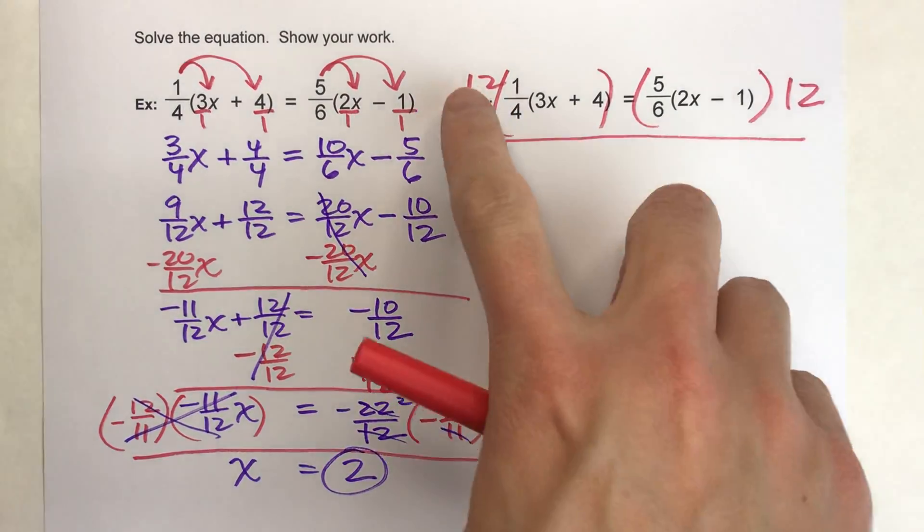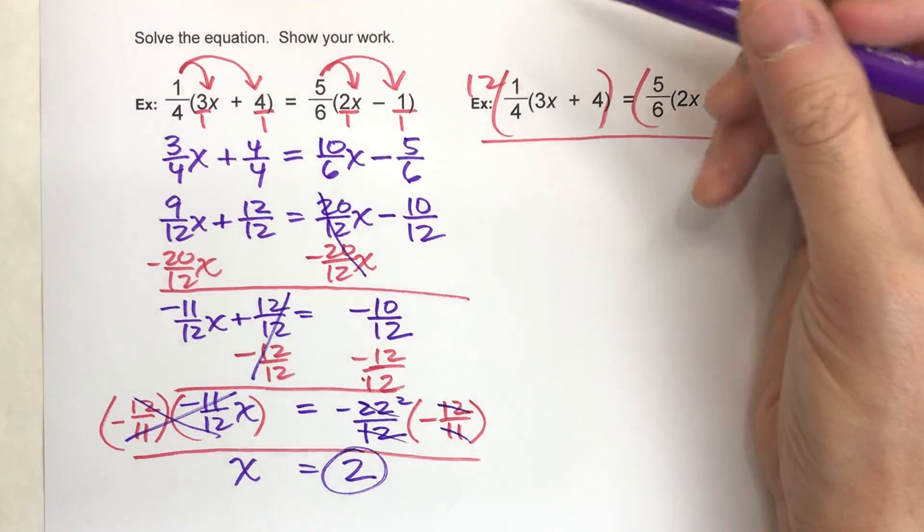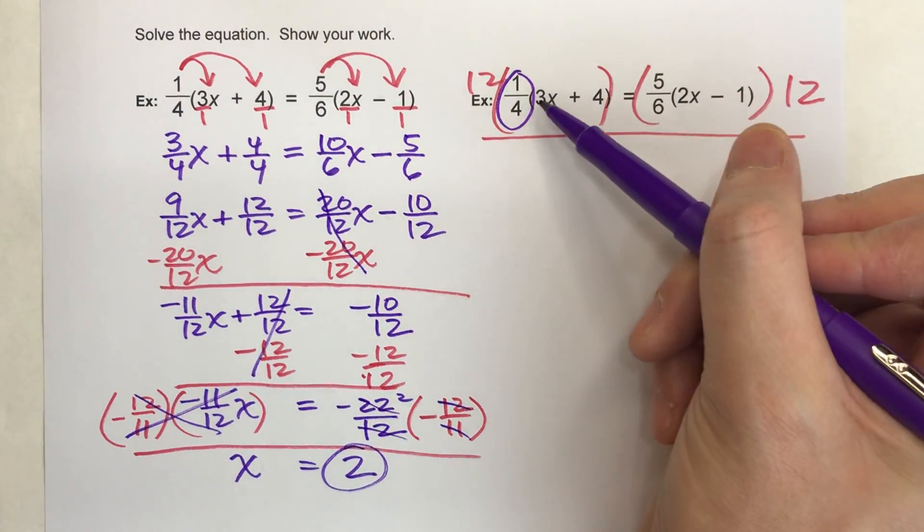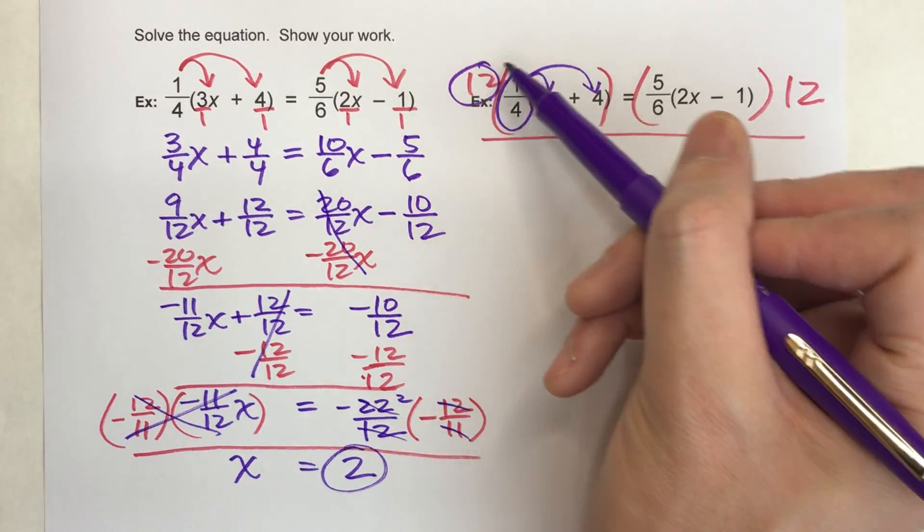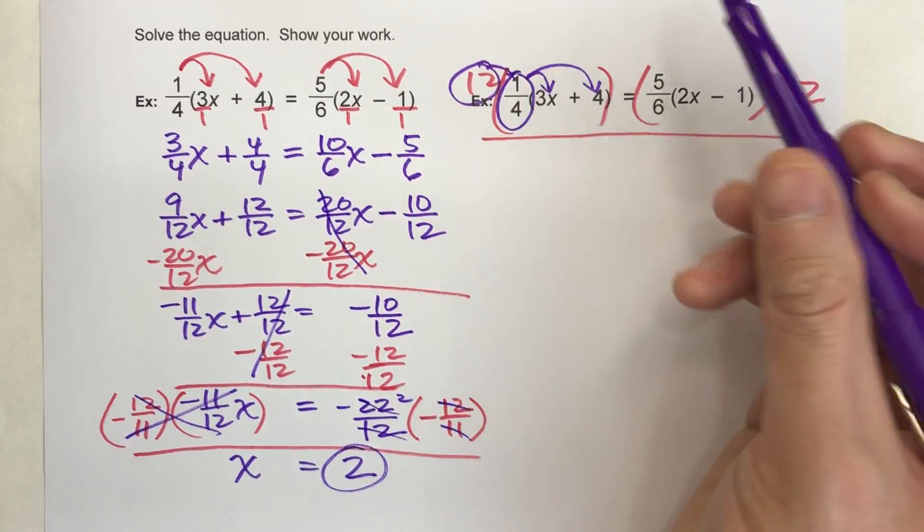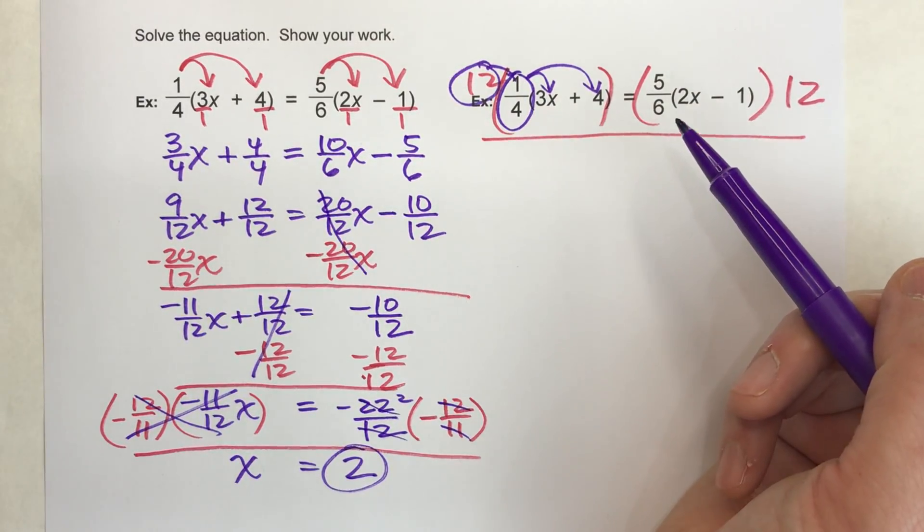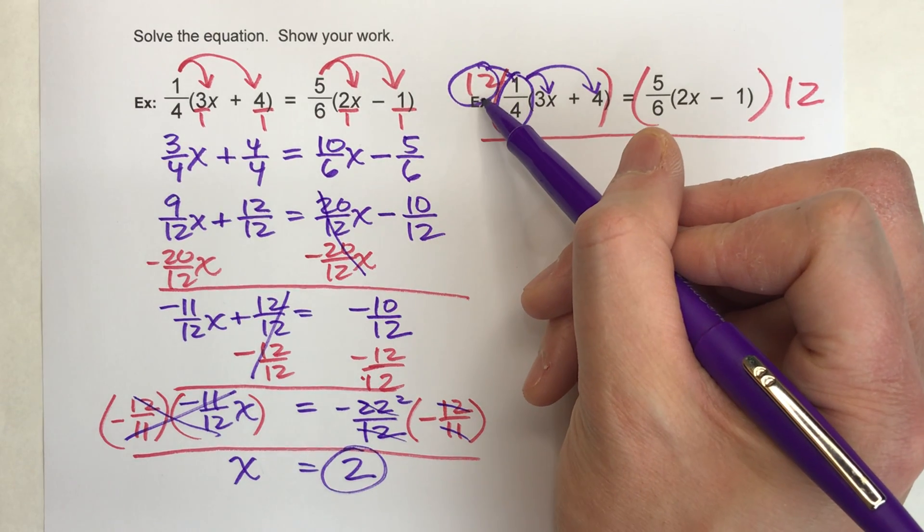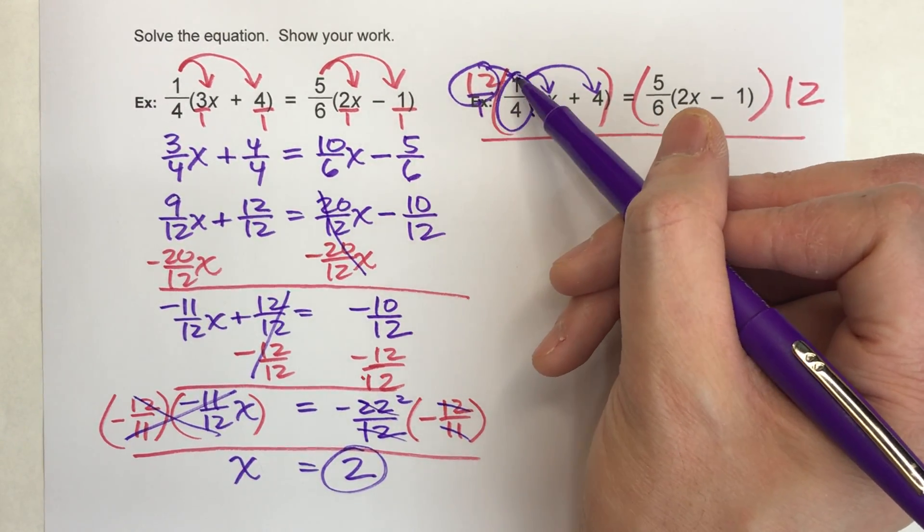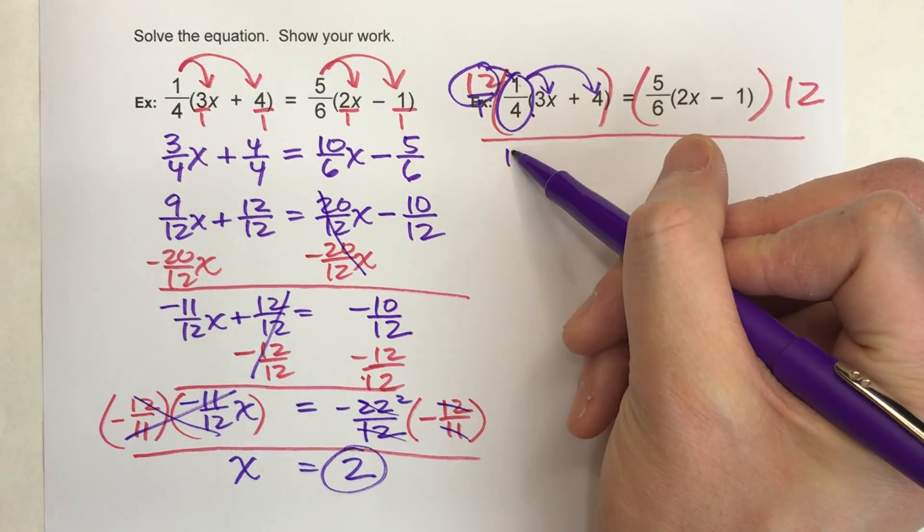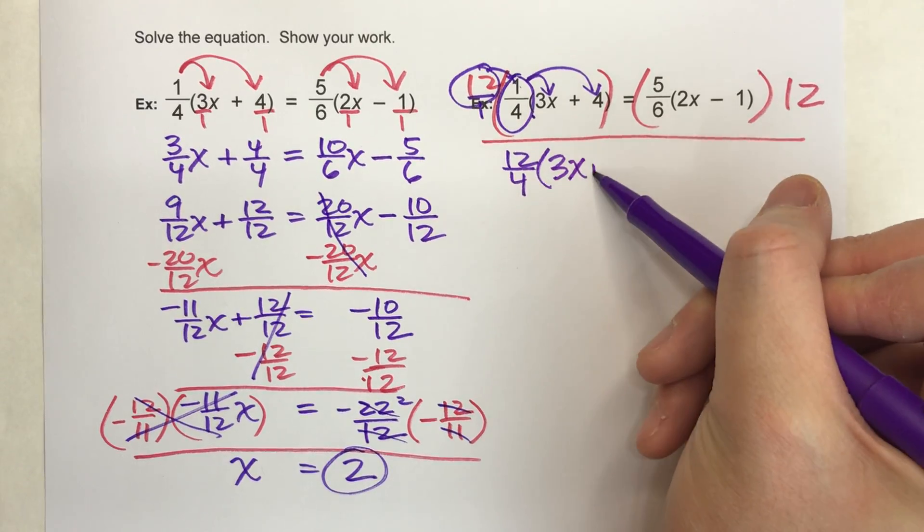Now you're probably thinking, oh, you have to distribute the 12 to everything in parentheses. Not really, actually. Because remember, this 1/4 is already being distributed to everything in parentheses. So if we multiply the 12 times the 1/4, it will automatically be distributed to all the things in parentheses next. So really all I have to do is multiply this 12 times 1/4. Alright, 12/1 times 1/4, 12 times 1 is 12, 1 times 4 is 4. This becomes 12/4 times (3x + 4).